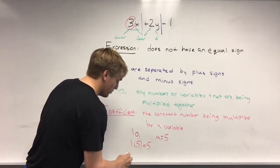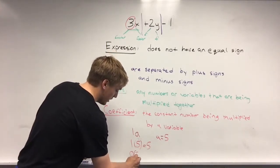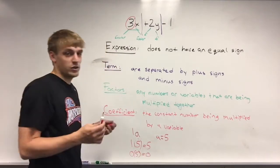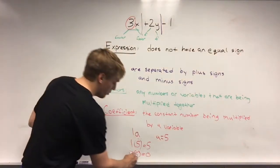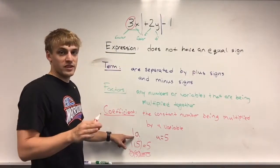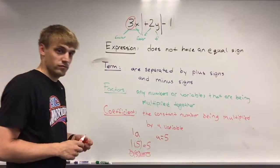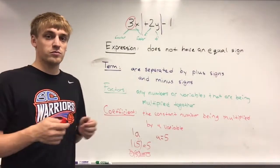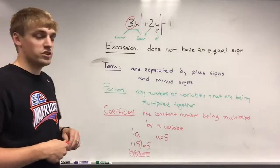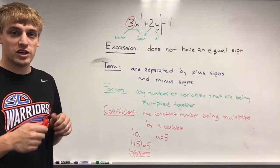If we put 0 times 5, that would give us 0, and that would not equal 5 anymore. So, the coefficient of the variable all by itself is 1. These are the terms that you're going to need to know for sure when we talk about expressions.